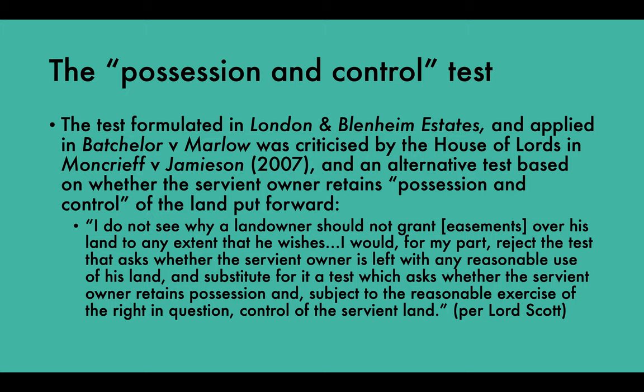The second competing test is the possession and control test. The test from London and Blenheim Estates and Batchelor v Marlow was criticised by the House of Lords in Moncrieff v Jamieson (2007), where an alternative test was put forward: rather than asking whether the servient owner is left with any reasonable use of his land, one should ask whether the servient owner retains possession and, subject to the reasonable exercise of the right in question, control of the servient land.